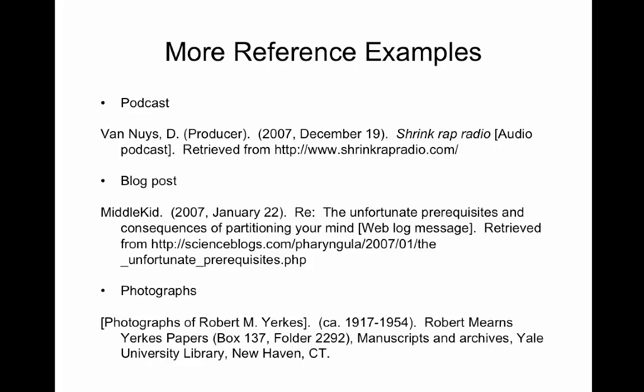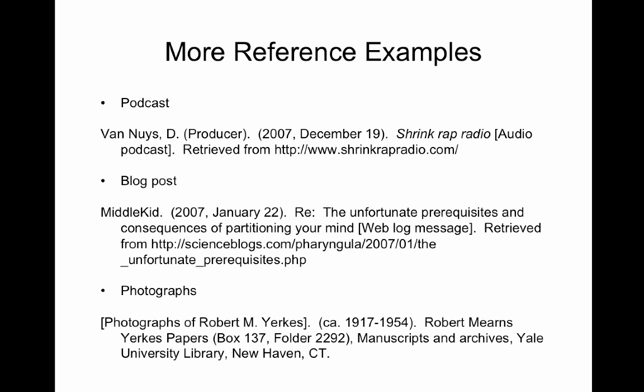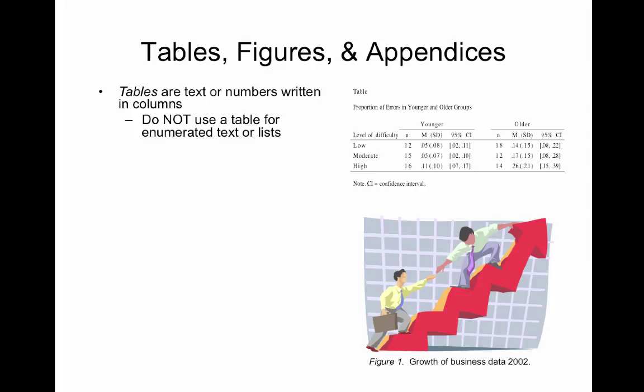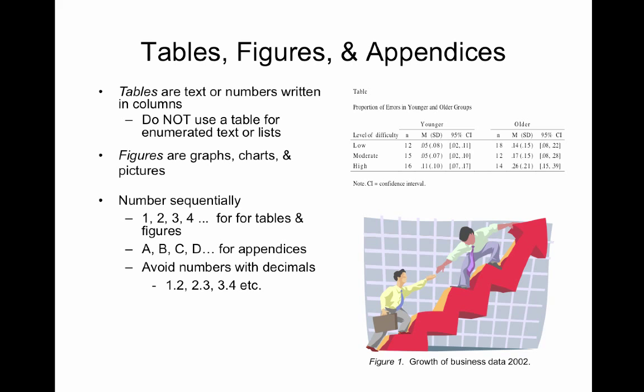Here are some more reference examples: for a podcast, for a blog post, and for photographs. Tables are text or numbers written in columns. Do not use a table for enumerated text or lists. Figures are graphs, charts, and pictures. You should number them sequentially: 1, 2, 3, 4 for tables and figures; A, B, C, D for appendices. Avoid numbers with decimals. Number tables separately from figures. Do not number a single item — just call it the figure, the table, or the appendix.